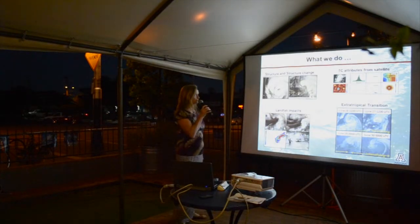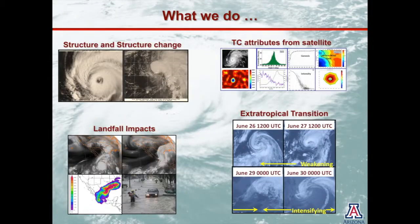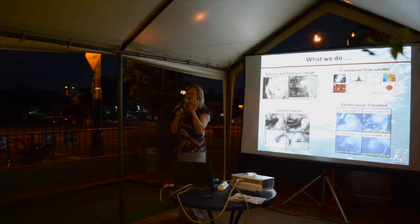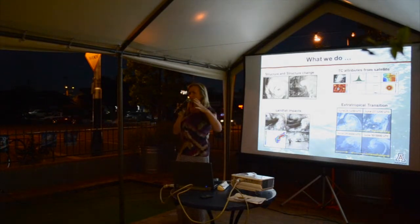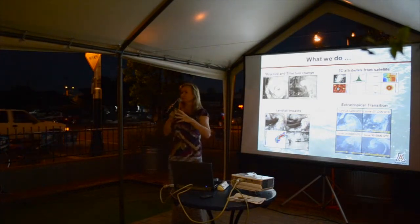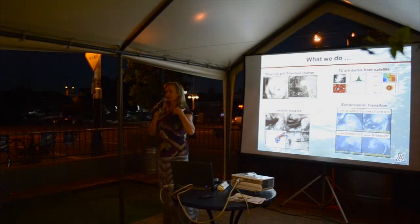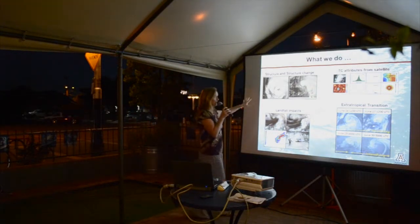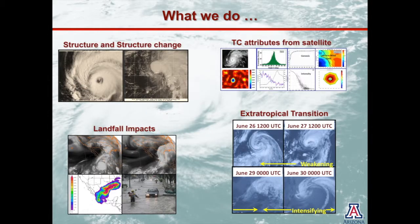When we study tropical cyclones, we look at structure and structure change. When we talk about structure, we're talking about the entire wind field and rain field of the tropical cyclone — not just what the single point intensity value might be, but how the whole wind field fluctuates. That's very important because it's the total wind field that drives things like the storm surge, and the entire wind field is where the damage potential lies. You can get very significant structure changes due to environmental interactions and interactions inside the tropical cyclone itself.